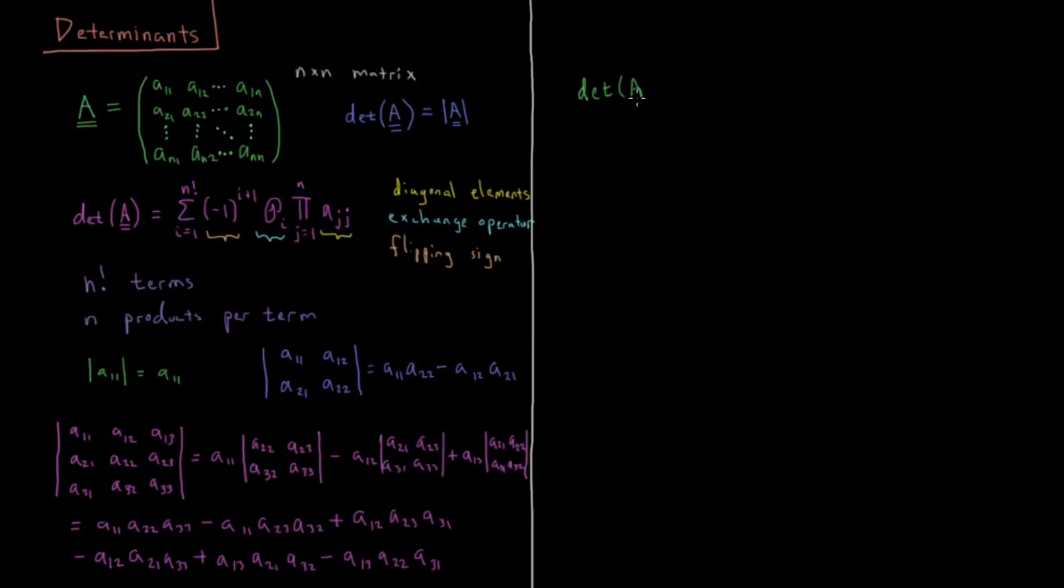So if we have the determinant of a times b, so we multiply, let's say matrix c equals a times b, what is the determinant of c? That's equal to the determinant of a times the determinant of b. And that makes sense. If you have two things which have a magnitude, you multiply them together, the resulting is the magnitude of the product. So that makes sense as far as determinants go.